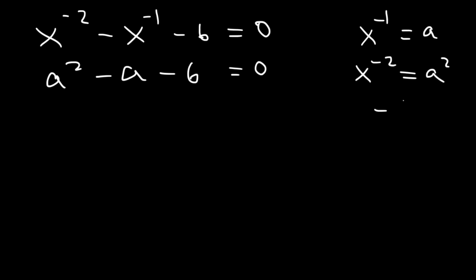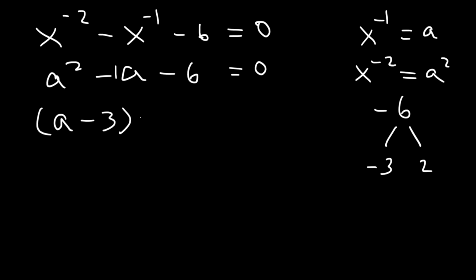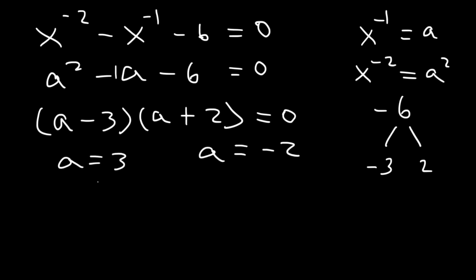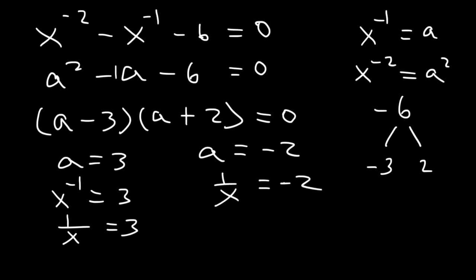Two numbers that multiply to negative 6 but add to negative 1 are negative 3 and positive 2. So it's going to be a minus 3 times a plus 2, which means a is equal to 3 and a is equal to negative 2. And a is x to the negative 1, which is 1 over x. To solve for x, let's raise both numbers to the negative 1 power.